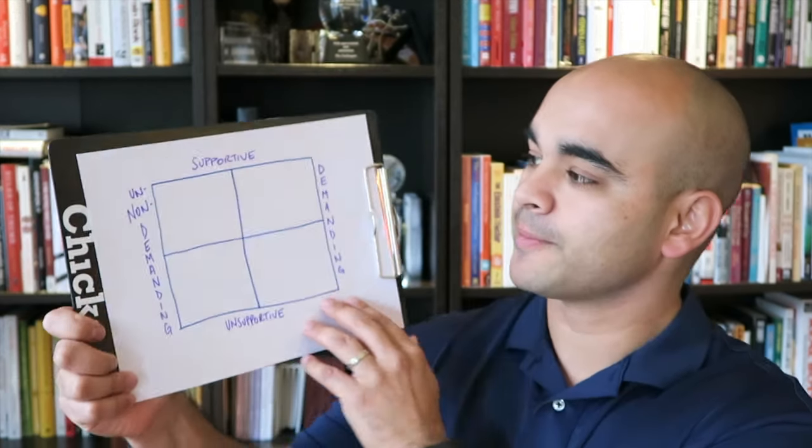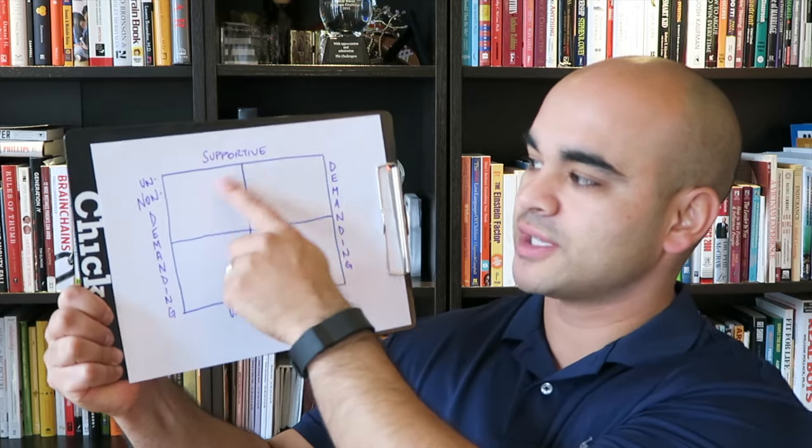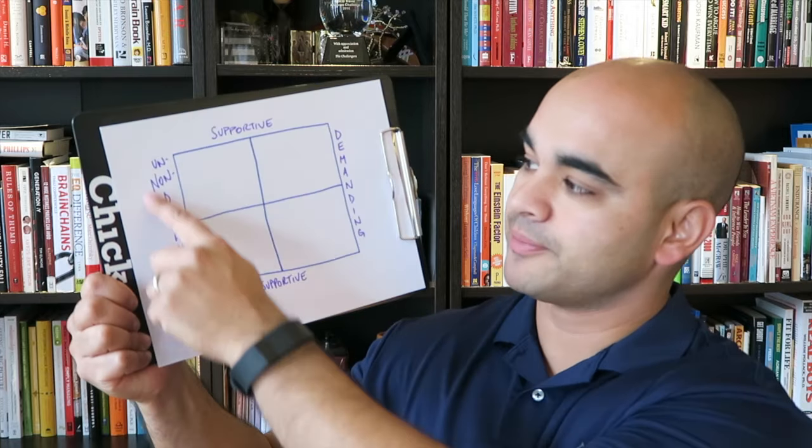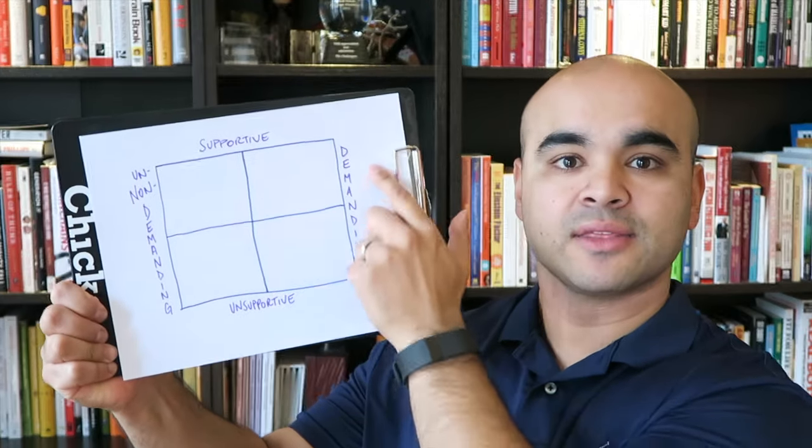In thinking this through, here is this interesting matrix that she pulls up. If this is the quadrants that we're looking at—supportive at the top, unsupportive down the bottom, undemanding down this side, and demanding down this side.